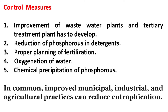Control measures include: improvement of wastewater plants and development of tertiary treatment plants; reduction of phosphorus in detergents; proper planning of fertilization; oxygenation of water; and chemical precipitation of phosphorus. In general, improved municipal, industrial and agricultural practices can reduce eutrophication.